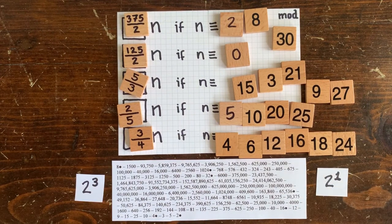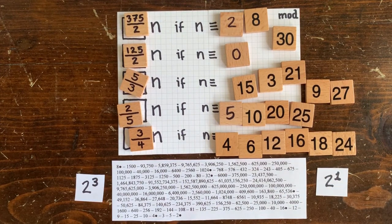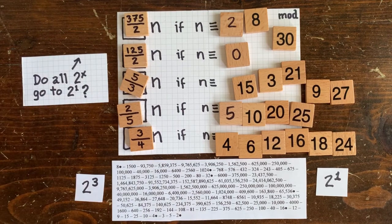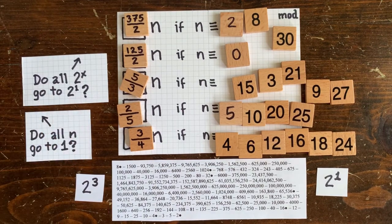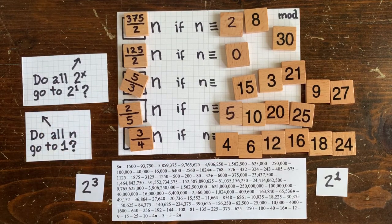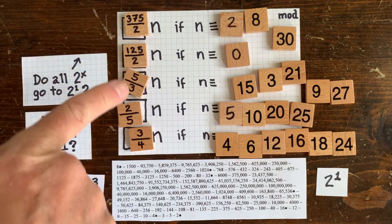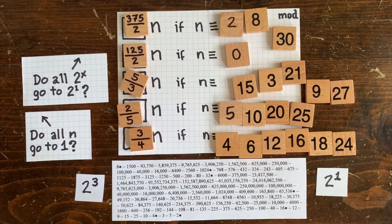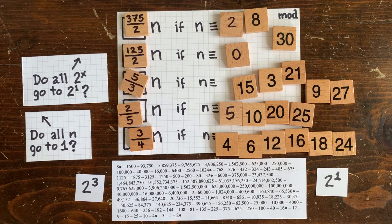So, does every number 2 to the x always reach 2 to the 1st? That's the same question raised by the 3n plus 1 conjecture. But now we can address that question with a rule that's simpler, at least in one way. Okay. Thanks. And see you next time.